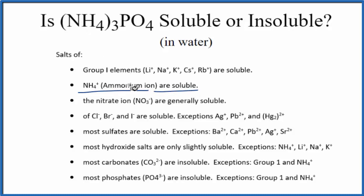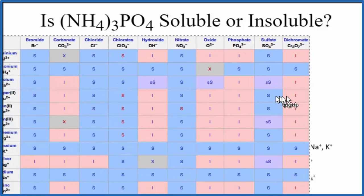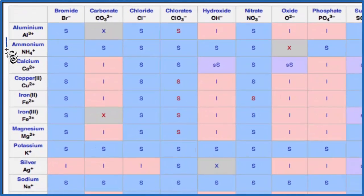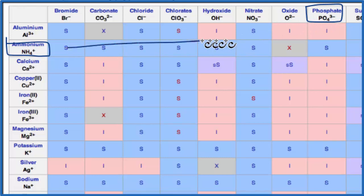We could also take a look at a solubility chart. So here on the chart, we have ammonium right here, NH4+, and we're looking for phosphate right here, PO43-. So we go across, and we go down, and that S means that ammonium phosphate is going to be soluble in water.